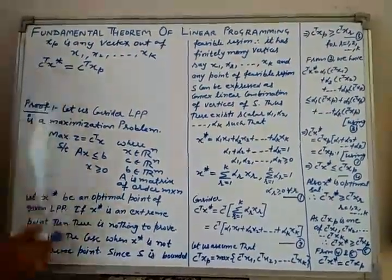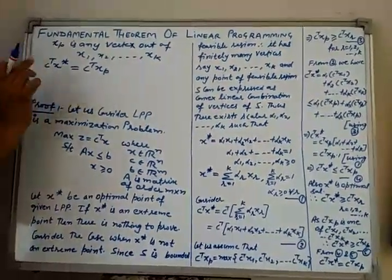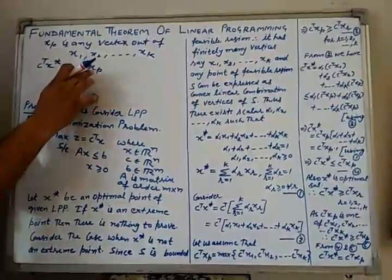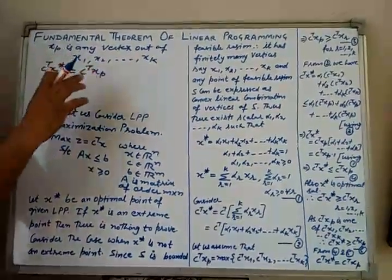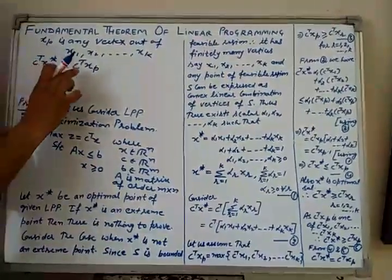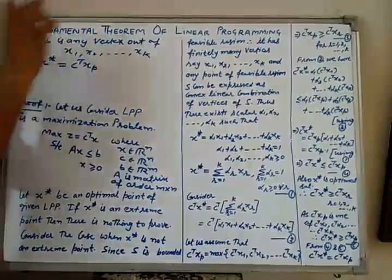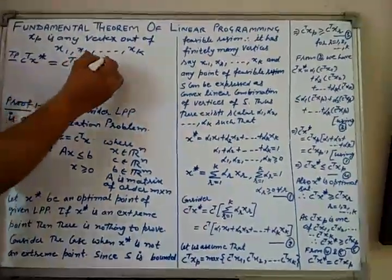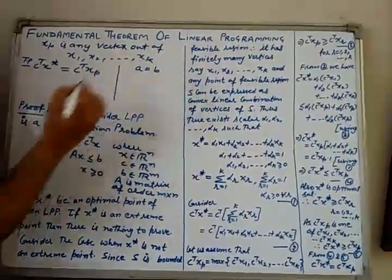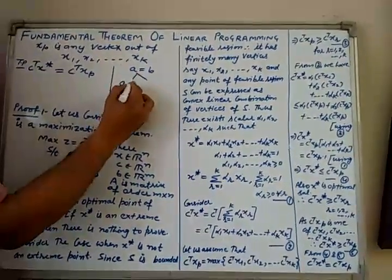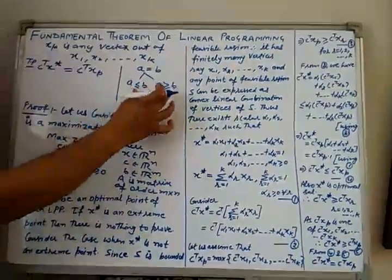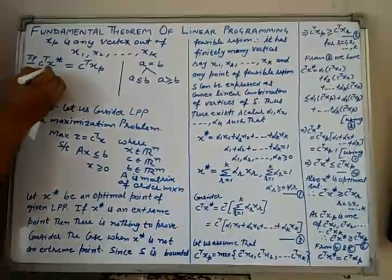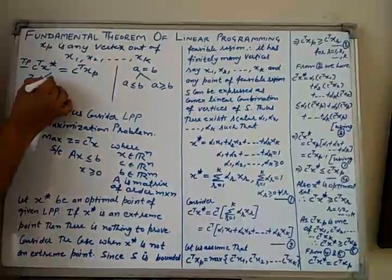Because X* is taken as the optimal solution of this LPP, if the objective function value at X* and at Xp are the same, then if X* is not an extreme point, the optimal value is also attained at least at one extreme point. To prove C^T X* = C^T Xp, we use the mathematical technique: prove A ≤ B and A ≥ B, then combine to get A = B. So our two aims are: (1) prove C^T X* ≤ C^T Xp, and (2) prove C^T X* ≥ C^T Xp.